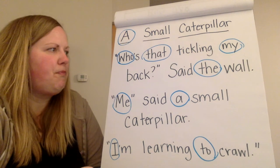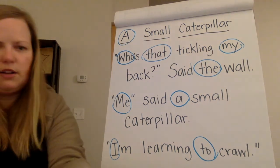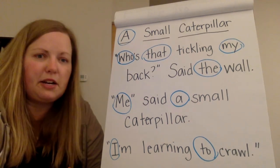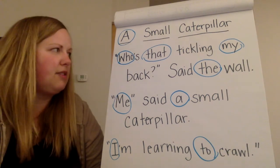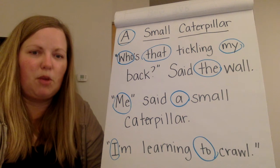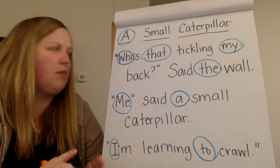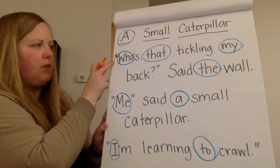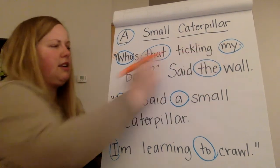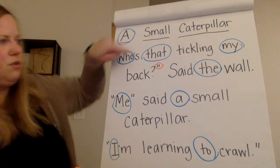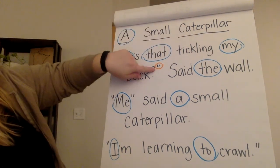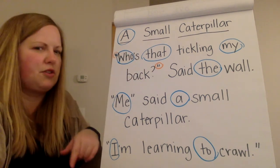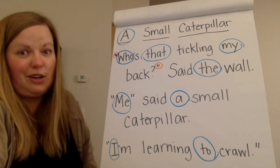I also want to point out — I'm going to put a different color — there's a lot of punctuation in here. Punctuation means periods, question marks, exclamation marks, and there's also something called quotation marks in this poem. Quotation marks are the marks used when someone is talking. So right here there are two little lines — that's a quotation mark. That's where the start of what they're saying is, and here is the end. So it says 'who's that tickling my back' and that's the end of what the wall is saying. You'll learn more about that in first and second grade, but it's still good to just kind of know what those are.